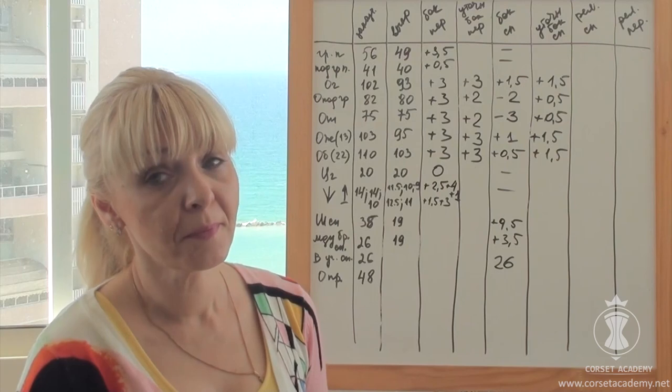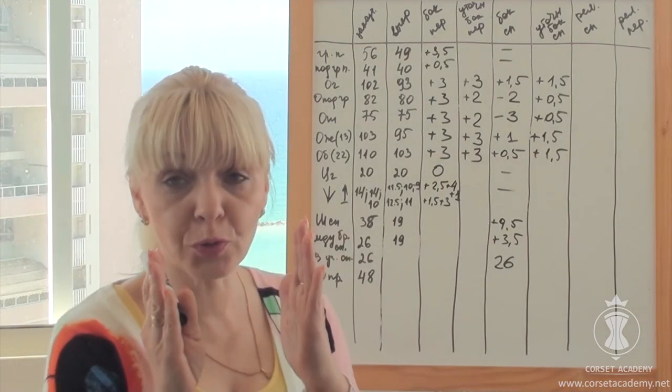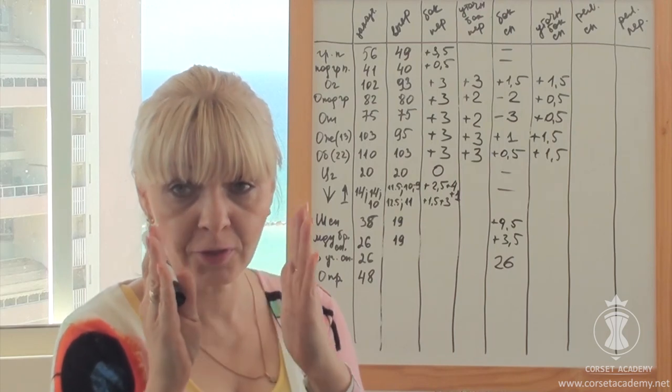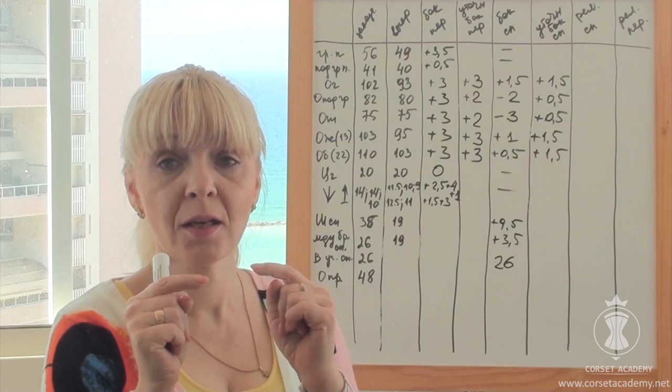We can alter the front princess seam starting from the waistline and down. We can reduce or increase the depth of the princess seam dart in the waist, in the stomach and in the hips.